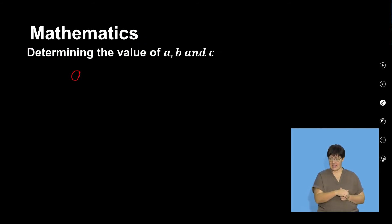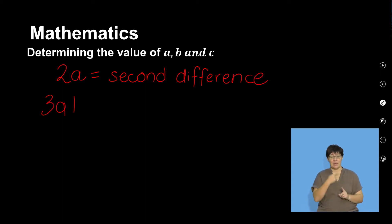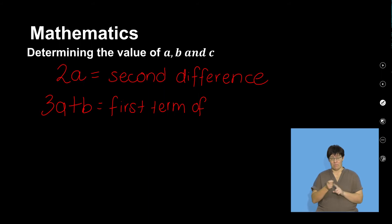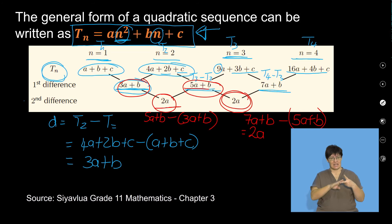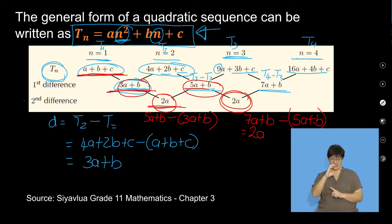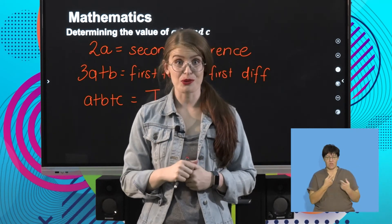To summarize how to determine A, B, and C: 2A is equal to the second difference; 3A plus B is equal to the first term of the first differences; and A plus B plus C is equal to term one of the sequence. We're going to use these relationships in order to actually do calculations with quadratic sequences.